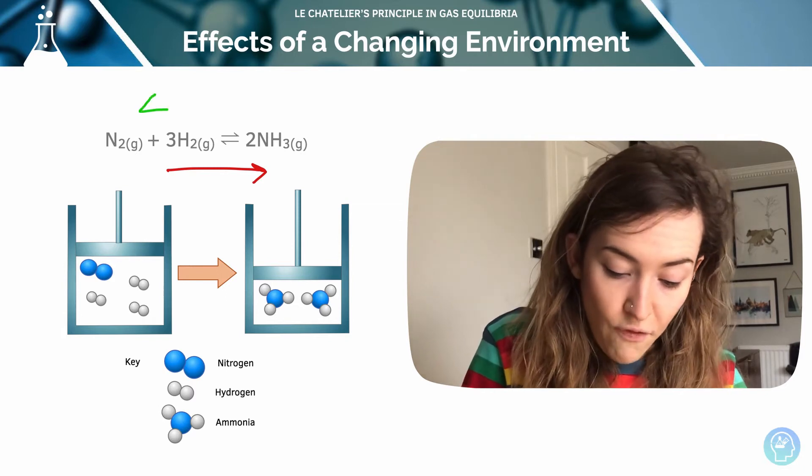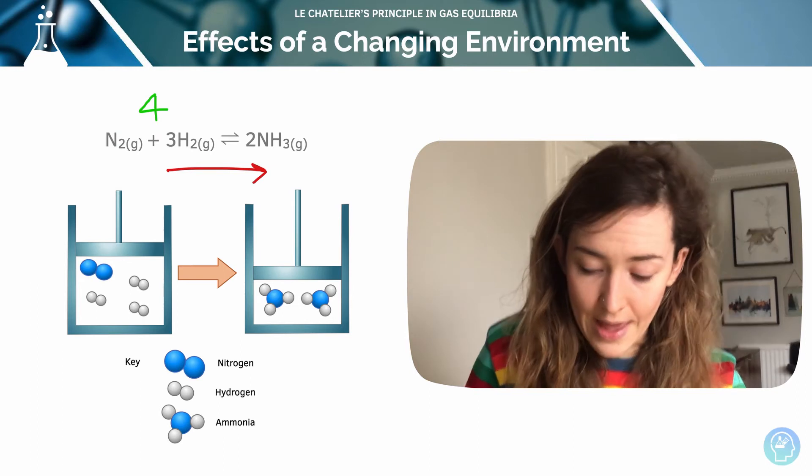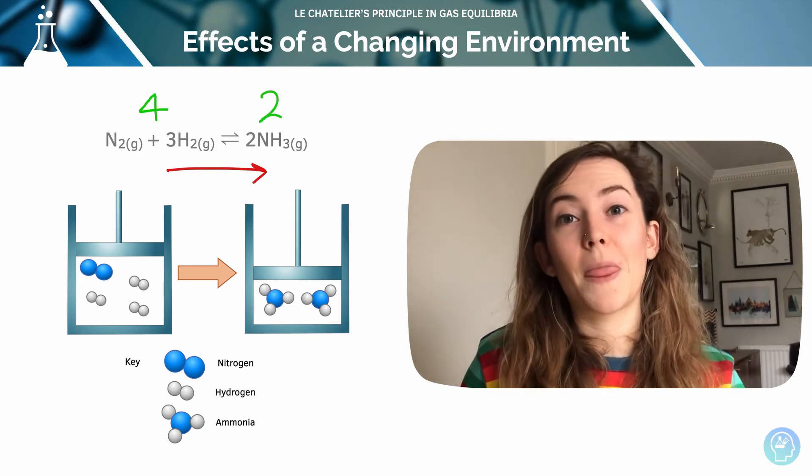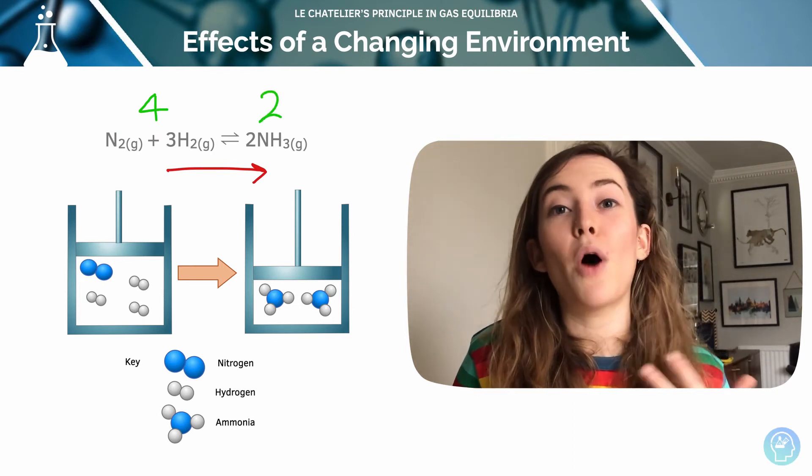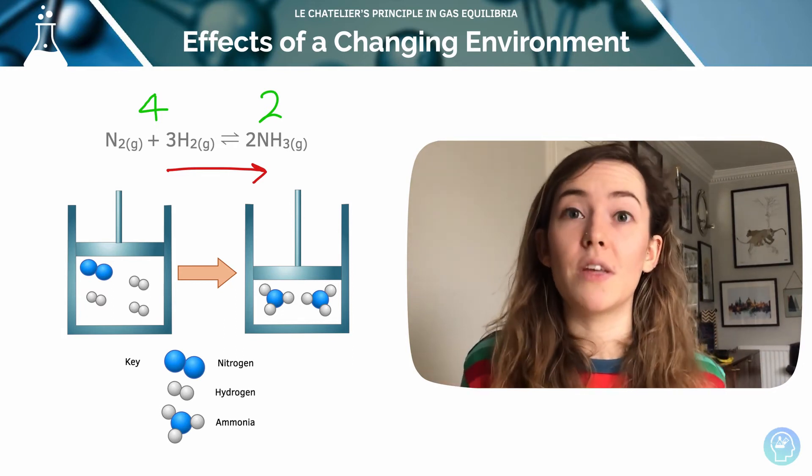You can see we've got four gaseous moles in total on the left hand side, one here and three here. And we've only got two on the right hand side. So it's going to shift in the forward direction to oppose the change. And overall, that will decrease the pressure of the system.